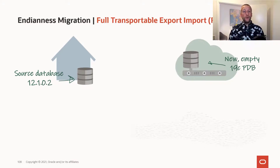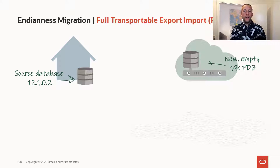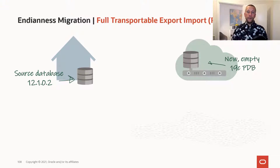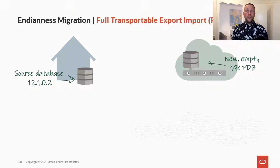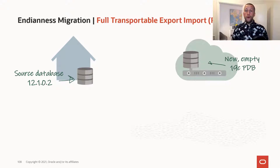The first topic is Full Transportable Export/Import. This is a way you can use Data Pump together with transportable tablespaces to make the process easier. The creation of metadata has become a lot easier using this approach. In this example, we have a 12.102 database that we would like to migrate into a 19c PDB. One of the advantages of using transportable tablespaces is that you can go to a higher version and a different architecture. But if you prefer, you can stay on 12.102 and migrate into a non-CDB database — you get full flexibility.